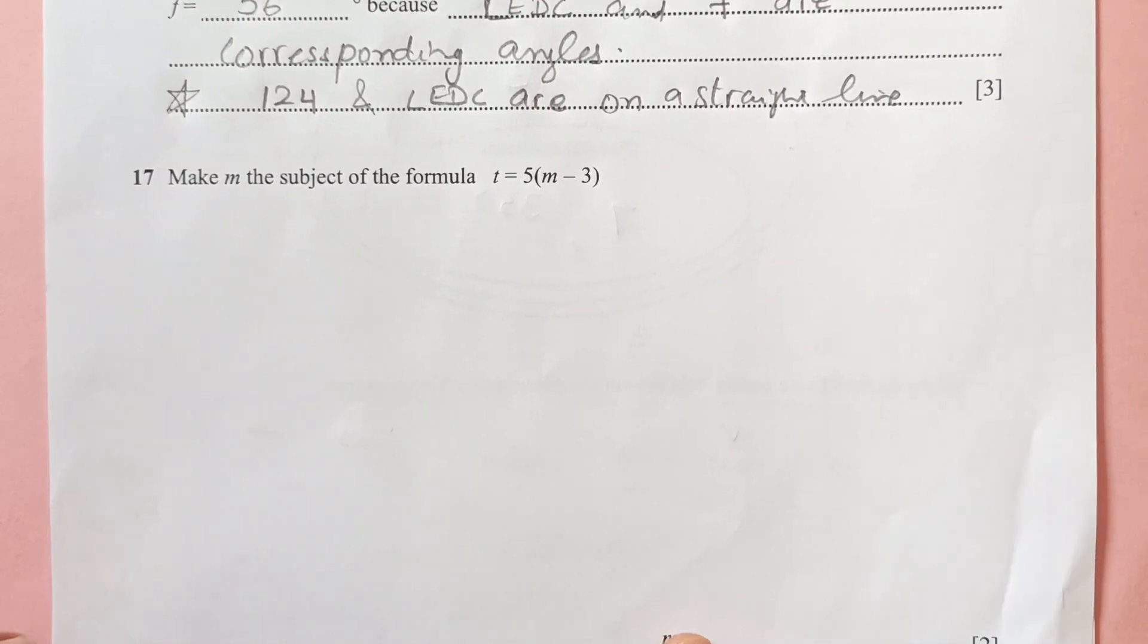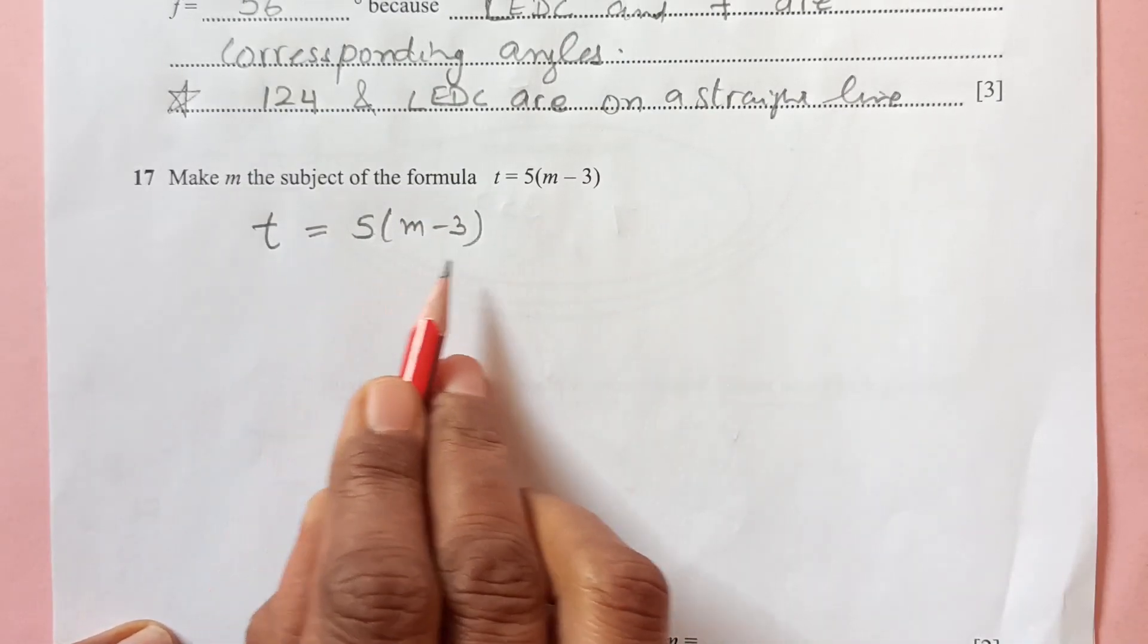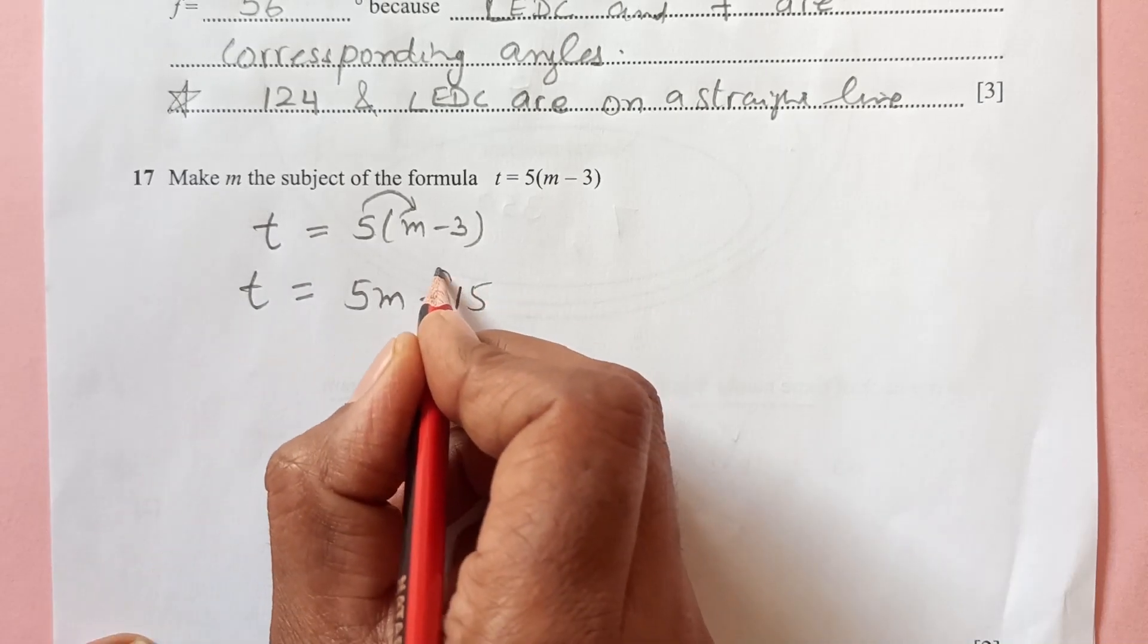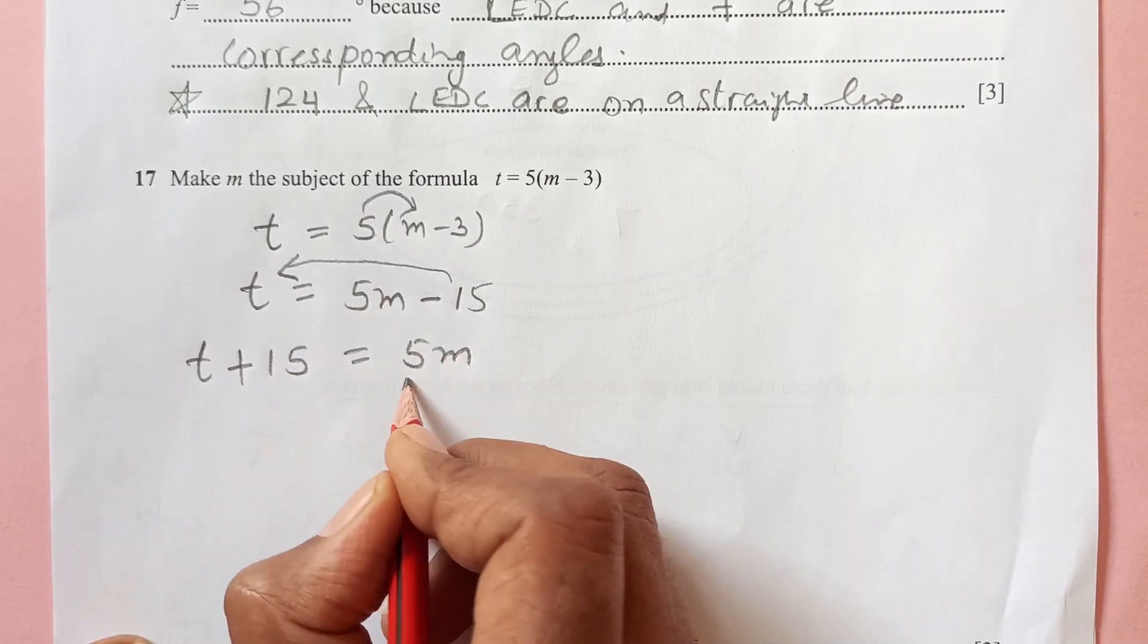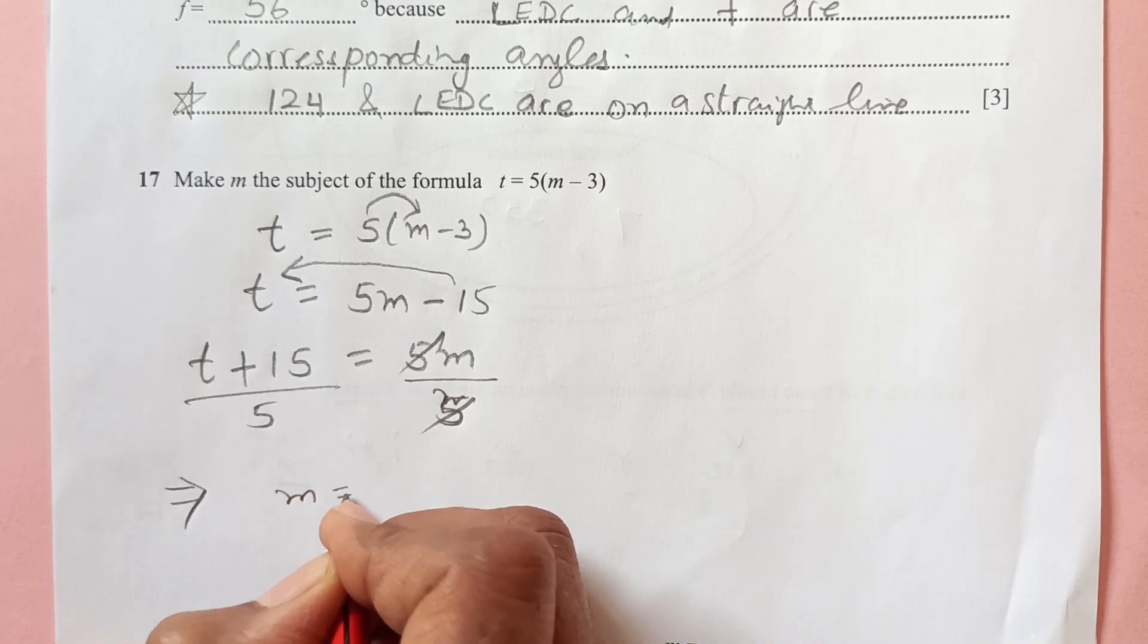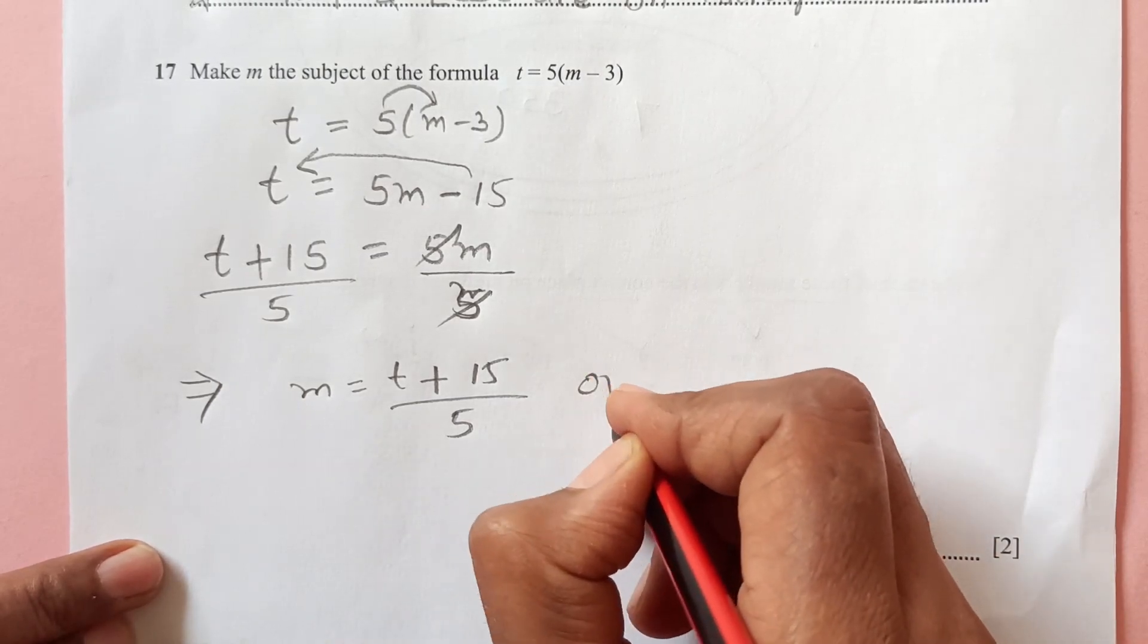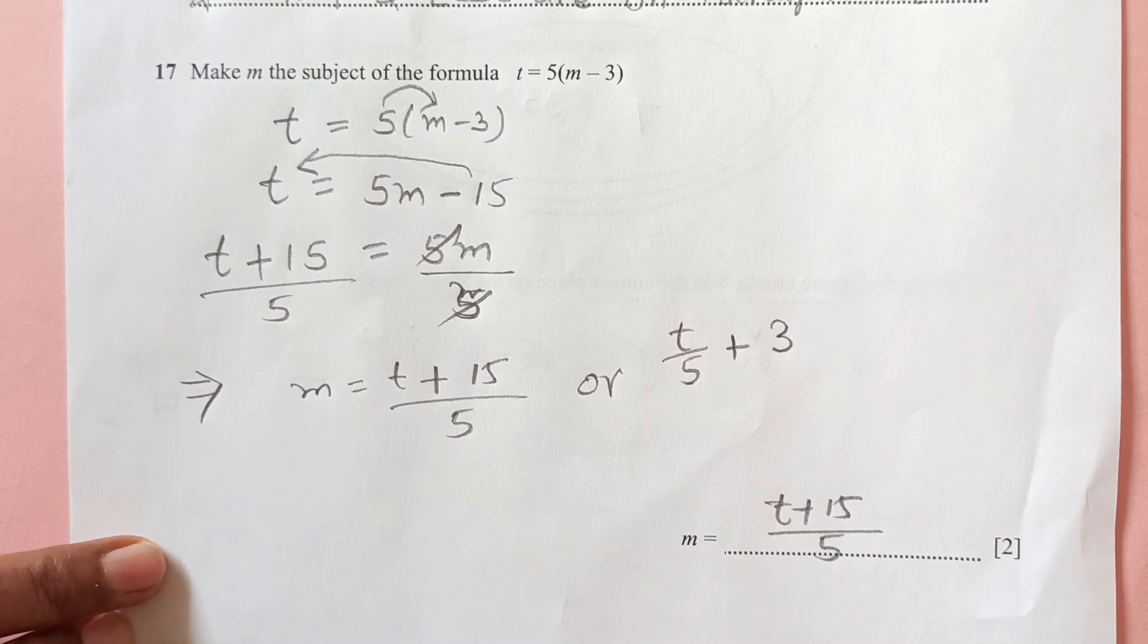Now number 17, make M the subject of the formula. So we have this equation T equals 5M minus 3. Now M is inside the bracket. To make M the subject, M should be outside. So we will expand the bracket. 5 times M is 5M, then minus 5 times 3 is 15. So now you shift 15 to other side. So this will become T plus 15 equals 5M. Now divide by 5. So M is equal to T plus 15 over 5. Or you can even write it like if you divide T over 5, 5 will divide both of them plus 15 divided by 5 is 3. So any of these answer is correct.